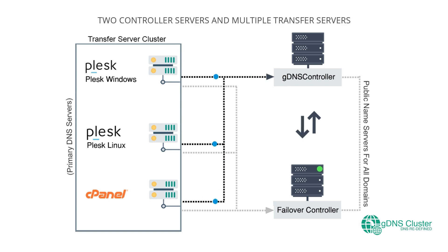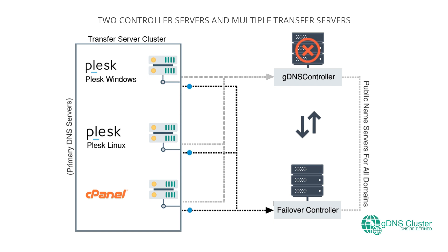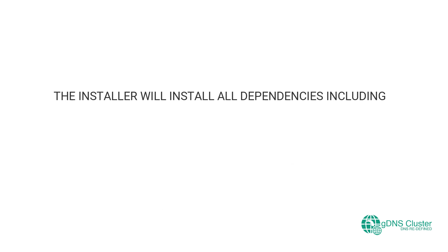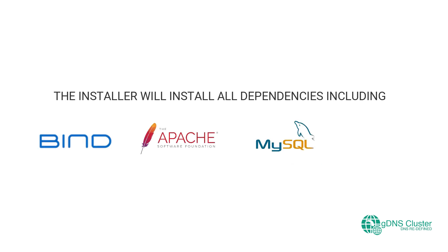The GDNS Cluster setup starts with the installation of GDNS Controller, which should be installed on a standalone server with no control panels. The installer will install all dependencies including Bind, Apache, MySQL, PHP, etc.